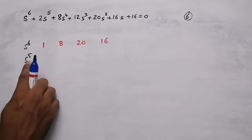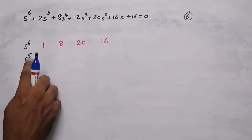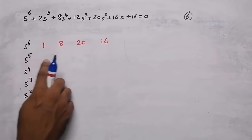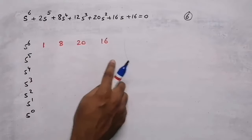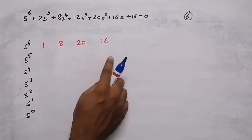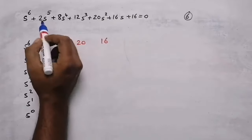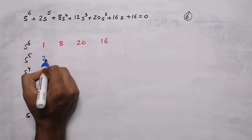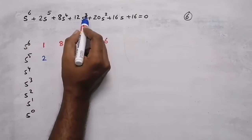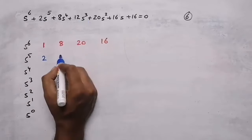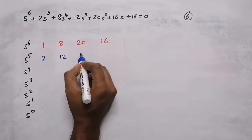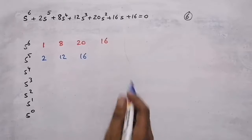In the second row, the highest power is 5, which is an odd number, so the row should contain only coefficients of odd power values. The coefficient near s^5 is 2, near s^3 is 12, and near s^1 is 16.